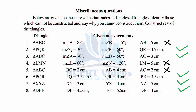For the second triangle, two angles are given and their sum is 90 degrees, making the third angle also 90 degrees, and one side QR is given. This follows the angle-side-angle (ASA) criterion, so this triangle is possible and we will construct it.